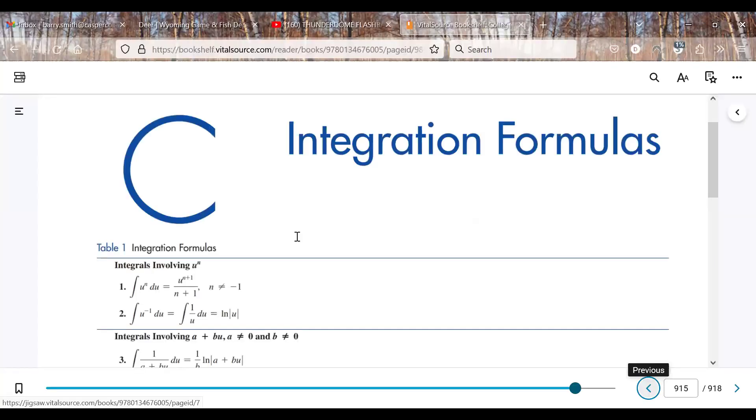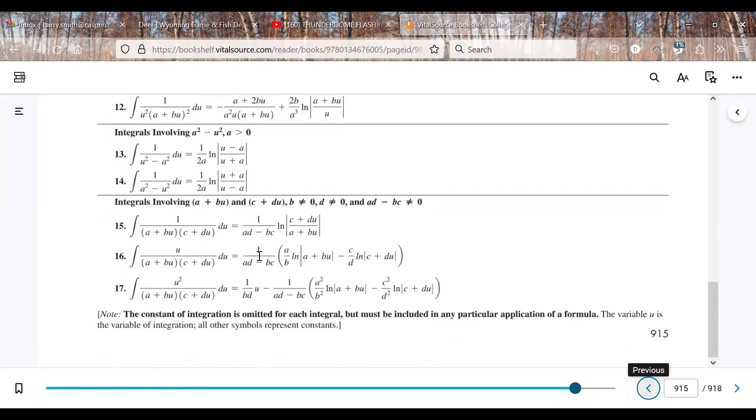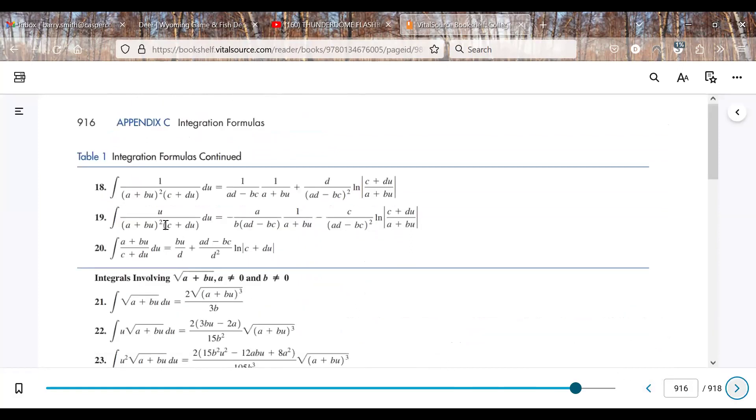And we're going to look, and we're trying to find something, 1 over something squared times something. And so if we keep going down, none of those look like that, but this one does. So we have A plus BU squared times C plus DU, then DU.